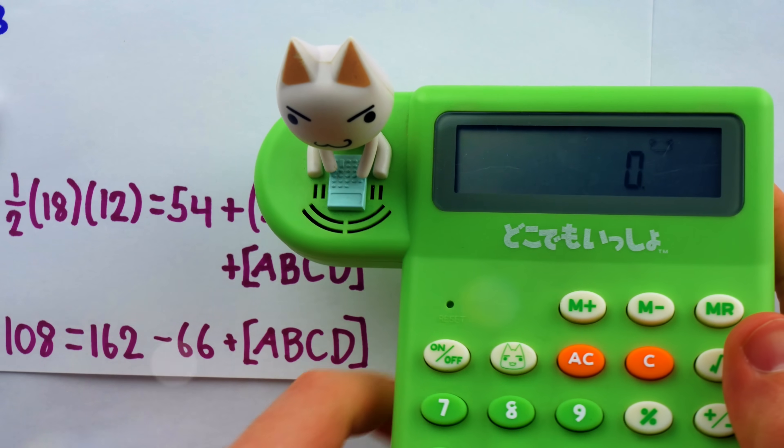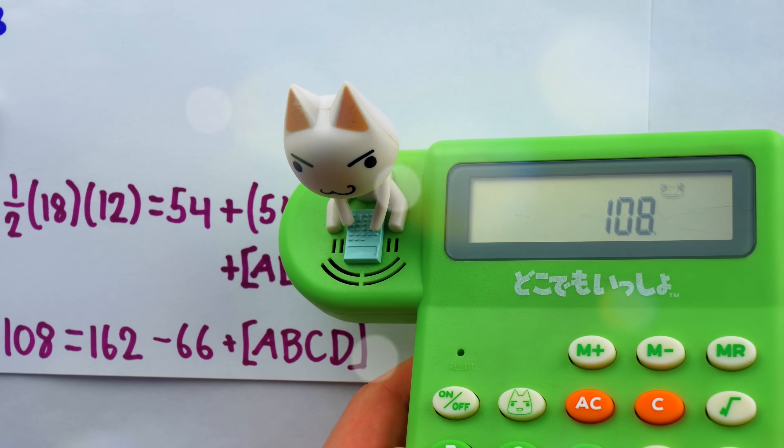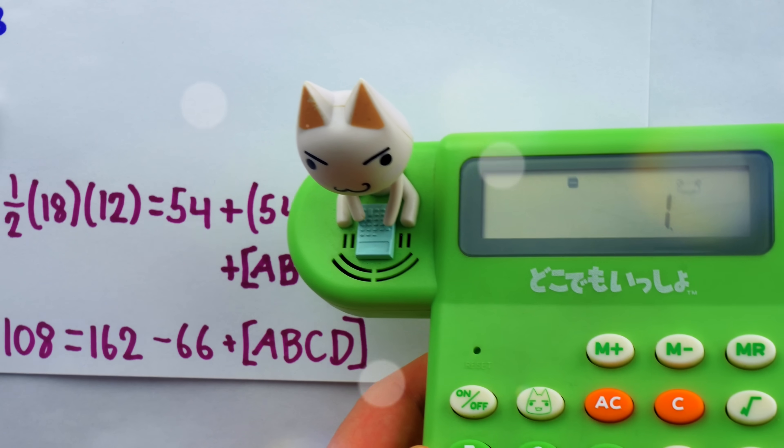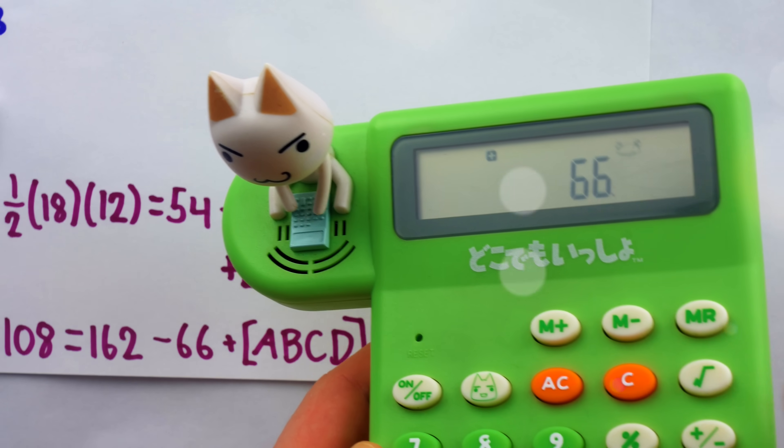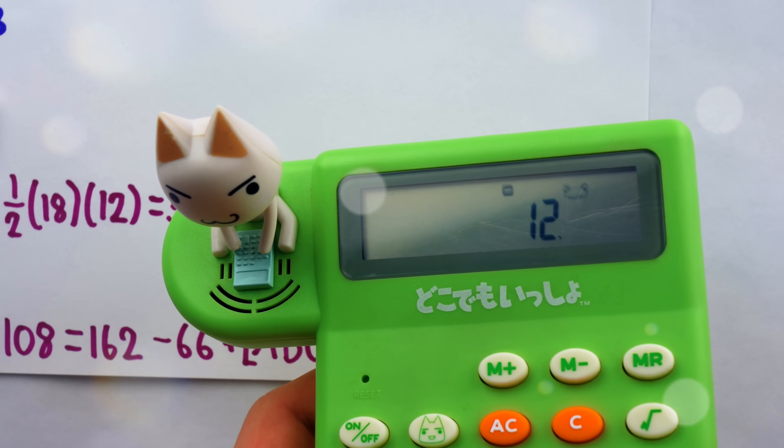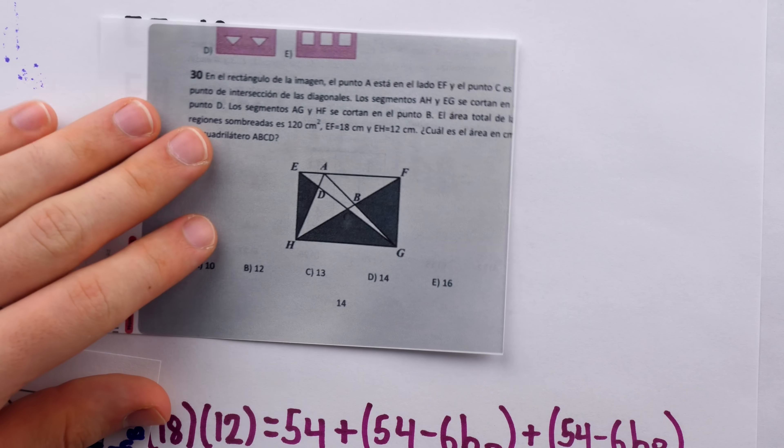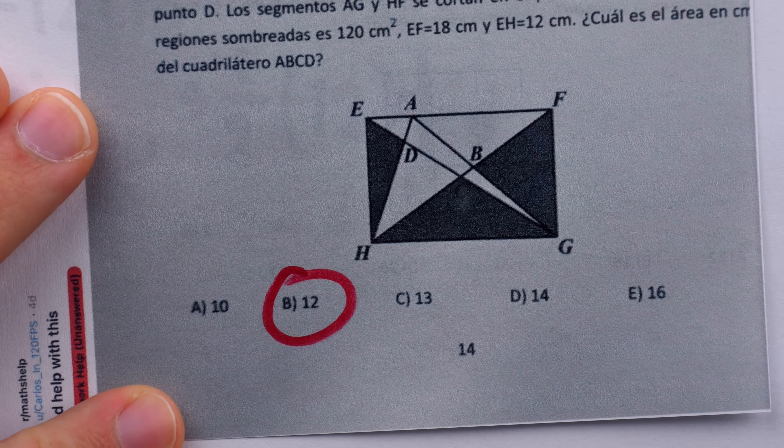Then, busting out our trusty calculator to crunch the numbers here, we have 108 on the left side of the equation, minus 162, and then plus 66, giving us a final answer of the area for ABCD of 12. And, going back to the original post, we see that was one of the possible answers that was answer choice B.